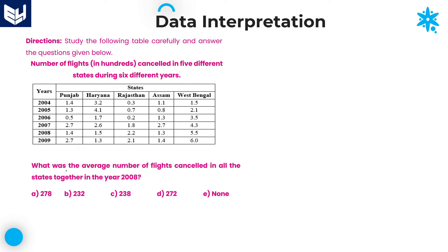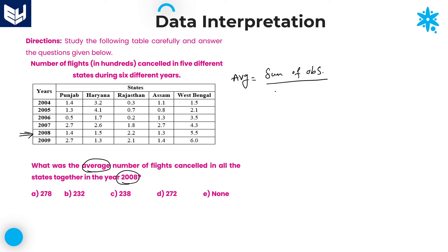Let's see the second question. What was the average number of flights cancelled in all the states together in the year 2008? We need to calculate the average number of flights cancelled in all the states together in the year 2008. Average is equal to sum of observations by number of observations — that is called average.